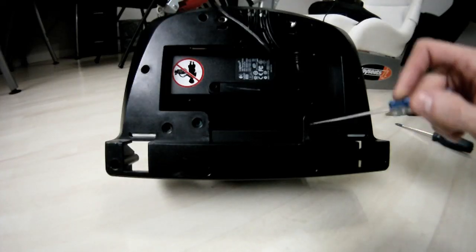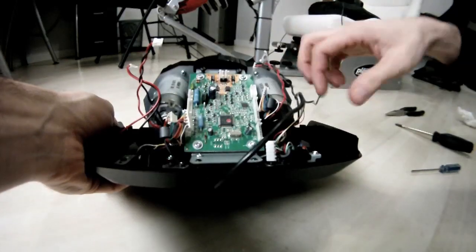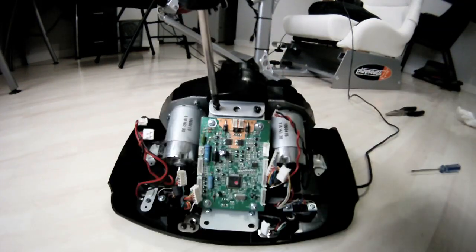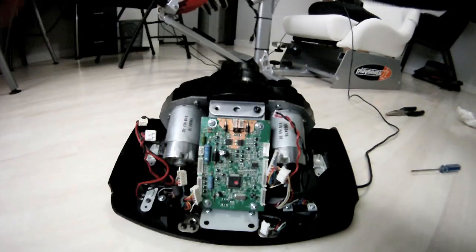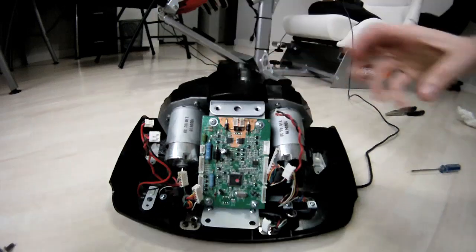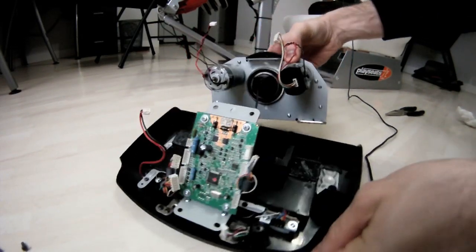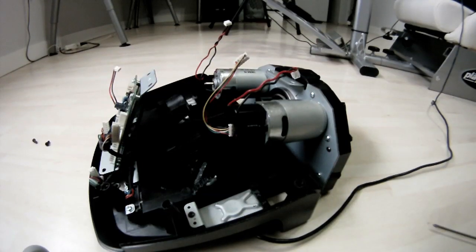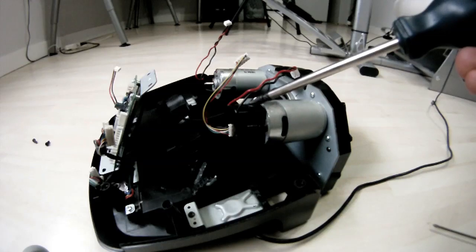Once you have these bottom four screws undone, flip this thing back over and remove the top two screws completely. Now you can take it out carefully because it's still connected. Once you've removed all the screws and disconnected all the wires, you're going to take this black cap off.